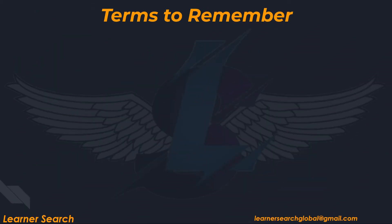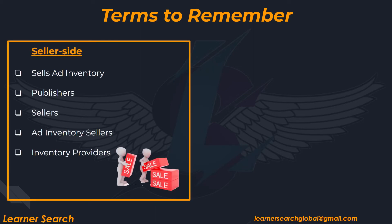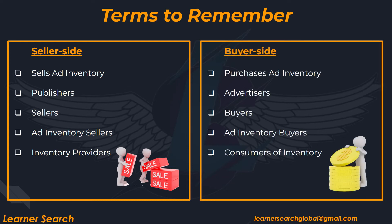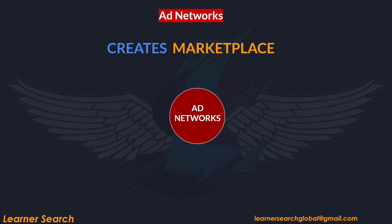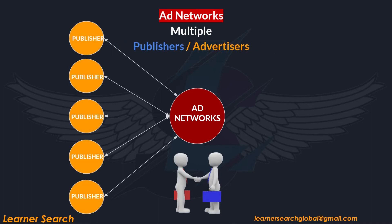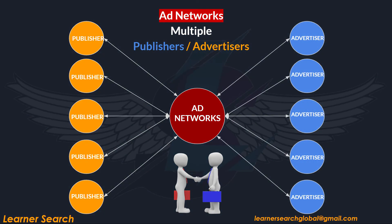Terms to remember before we proceed to the next slides. On the seller side of the ecosystem, players sell ad inventory. Publishers stand on the seller side. 'Seller' is the term to define who sells ad inventory — all of which can be called ad inventory sellers or inventory providers. On the buyer side of the ecosystem, advertisers purchase ad inventory and stand on the buyer side. 'Buyer' is the term to define who purchases ad inventory — all of which can be called ad inventory buyers or consumers of ad inventory. Ad networks create a marketplace where they connect multiple publishers, who are providers of ad inventory, and advertisers, who are consumers of ad inventory.